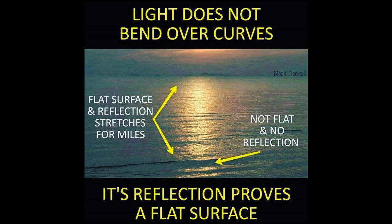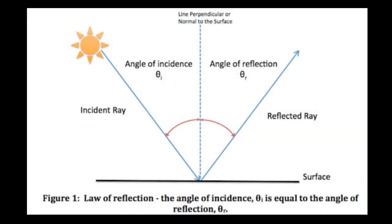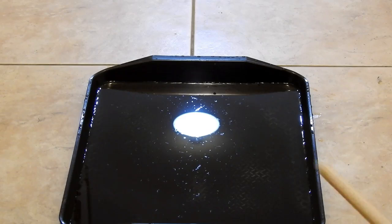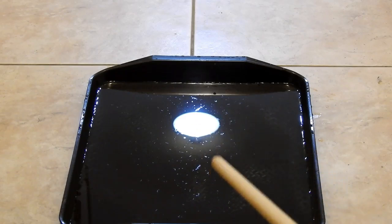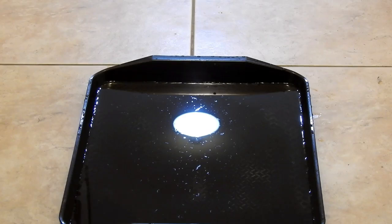Of course it isn't, and this is very easy to demonstrate. As any student who has done high school science or physics knows, the angle of reflection equals the angle of incidence, which is why we can see a perfect reflection of the ceiling light in this water. As any flat earth believer will tell you, water always finds its level, and this water is flat.